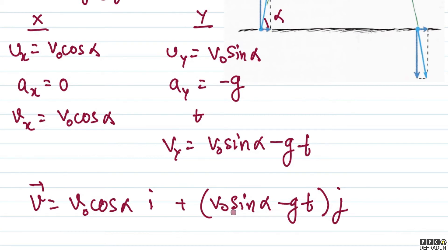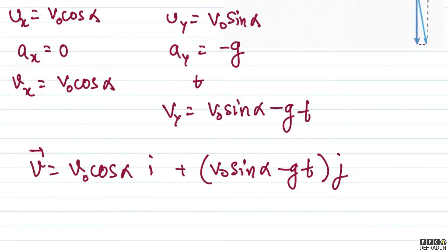And exactly at time t equals v-naught sin alpha over g, the y component of velocity becomes zero.